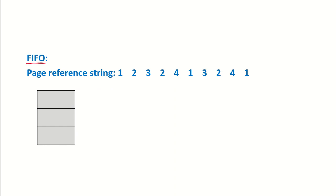In the first case, when we have the First In First Out page replacement policy, we have three page frames in main memory. The first reference is to page 1, which is a page fault because the memory is initially empty — wherever there is a fault, I am going to mark it with an arrow. Page 1 is brought in, then page 2 causes a fault, then page 3 causes a fault. Then a reference to 2 is a hit because 2 is already present in memory.